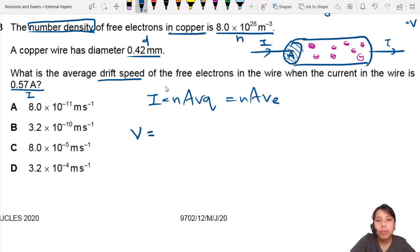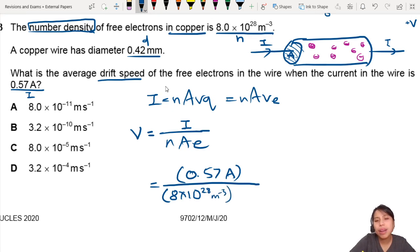So V will be I over NAe. E is the charge of an electron. So I'm going to plug in all my values here carefully to make sure there's no mistake. 0.57 amps. Number density, 8 times 10 to the 28 per meter cube. It's in SI unit, so that's very nice. Area. What's area?